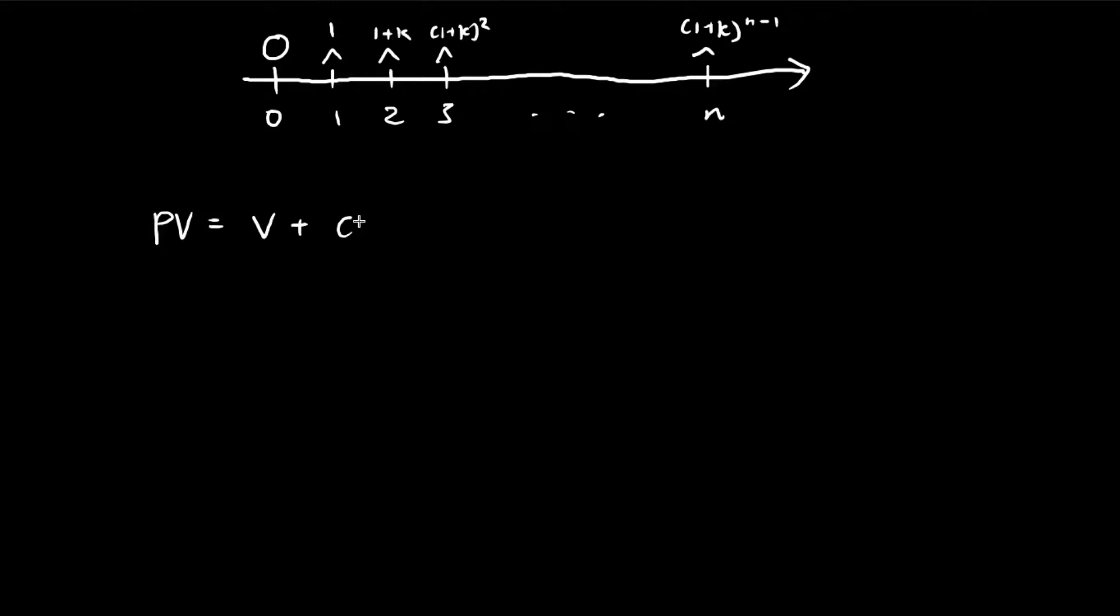The payment at time 2 is just (1+k), and then bring it back 2 years. This keeps going on: (1+k) squared, v cubed, and it keeps going all the way to (1+k) to the n minus 1, v to the power of n.